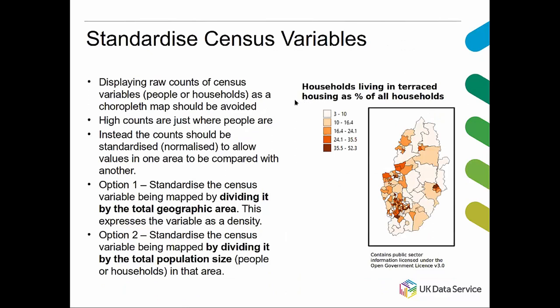In terms of standardizing census variables, the census data gives you raw counts — the number of people per output area or per county. You can't just map it as-is because high counts will simply show you where the people are. Instead you have to do some sort of standardization so you can compare one area to another in a standard way. You can divide that count by the area of the actual boundary, or more likely divide it by the total population size within that area. So instead of showing a raw count, you're showing a proportion — instead of saying there are 500 people, you're saying 15% of those people are employed in manufacturing, or are male or female, or travel to work by car or bicycle.